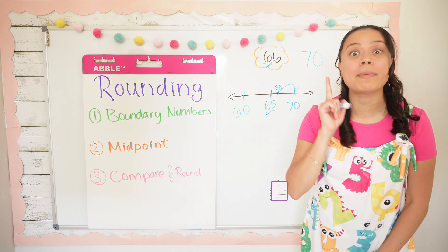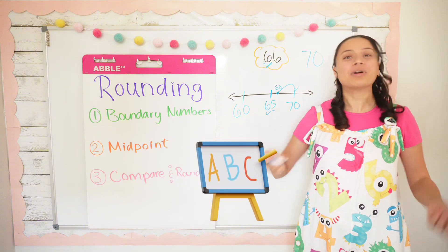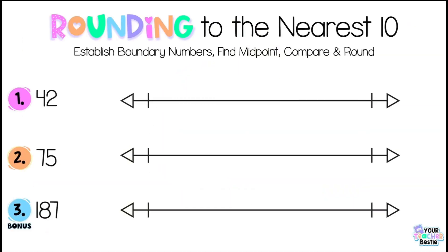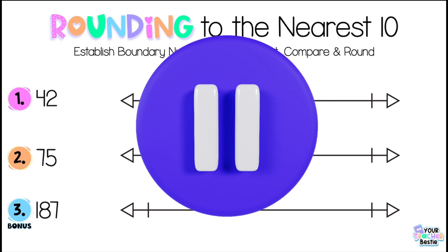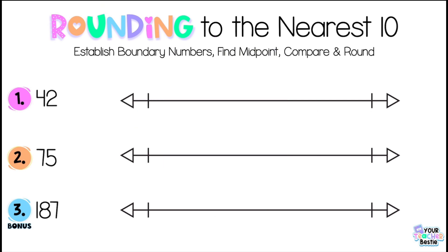Are you ready to do some practice with me? Go ahead and grab a paper and pencil or a whiteboard. It's bestie practice time. Feel free to pause the video and work ahead of me or just follow along for guided practice. Go ahead and draw a number line on your paper. Let's round the number 42 to the nearest 10. I'm going to underline the tens place — in this case, we're underlining the four — and then establish the boundary numbers. Between what two tens does 42 live? Between 40 and 50. Now we're going to establish the midpoint, which is the halfway point between 40 and 50, which is 45.